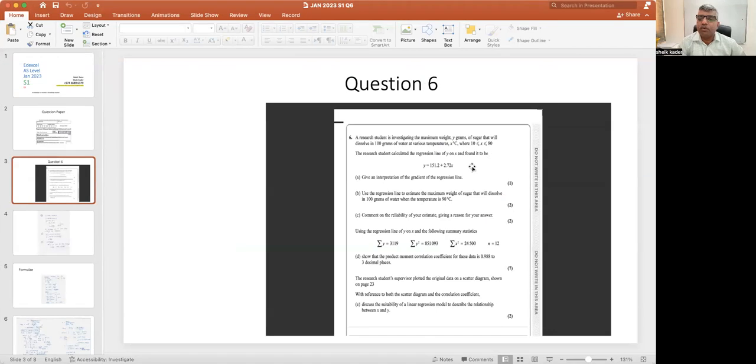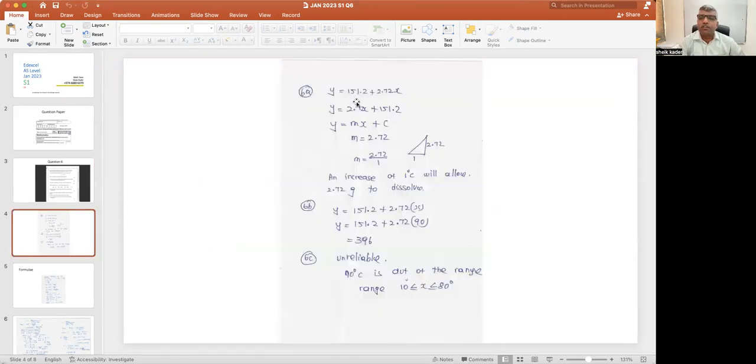Question A: y equals 151.2 plus 2.72 times x. Give an interpretation of the gradient of the regression line y equals 151.2 plus 2.72x, which is in the form y equals mx plus c.